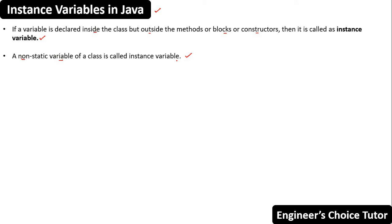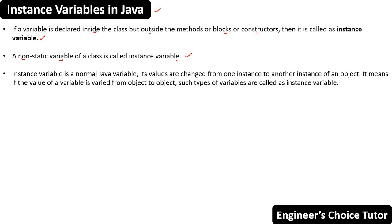Instance variables are normal Java variables whose values will vary from object to object. An instance variable is a normal Java variable whose values are changed from one instance to another instance of an object. It means if the value of a variable varies from object to object, such type of variables are called instance variables.